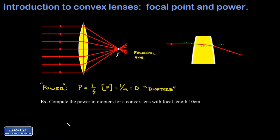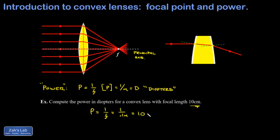We'll wrap up this chapter with a simple example: compute the power in diopters for a convex lens with a focal length of 10 centimeters. You just take one over F, putting it in the right units: 1 over 0.1 meters, and you get 10 inverse meters, or 10 diopters for the power.